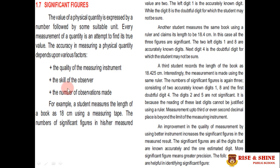Here we have three factors that affect any measurement. How accurate a measurement is depends on these three factors: first, the quality of the measuring instrument — for example, a meter rule gives less accuracy than a vernier caliper, and a vernier caliper gives less accuracy than a screw gauge. Second, the skill of the observer. Third, the number of observations made.